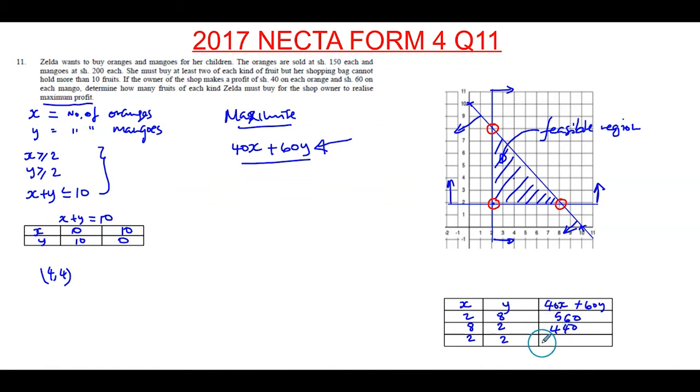So out of these values of x, which ones give this shop owner the maximum profit? Well, when this customer, Zilda, buys 2 oranges and 8 mangoes. So these are your values that will maximize profit.